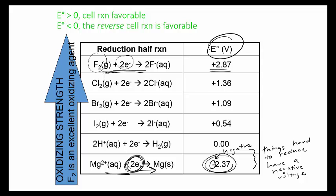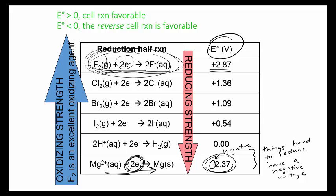As you go up this list, it's easier and easier for these to reduce, so these are better and better oxidizing agents because they're easier and easier to reduce. As you go down, these are really hard to reduce. The reverse of these reactions happens very easily — flipping this to write the oxidation half reaction, this is actually very easy and the sign actually changes to plus 2.37 volts.